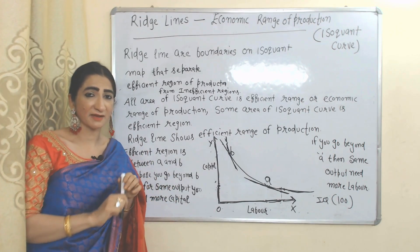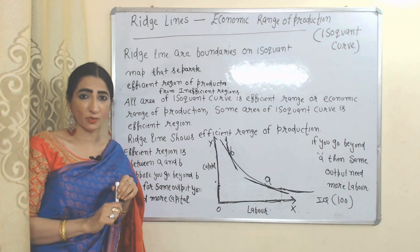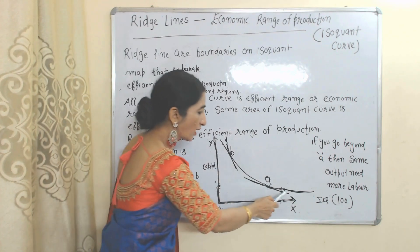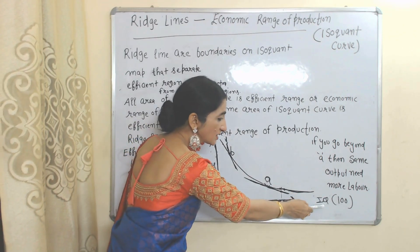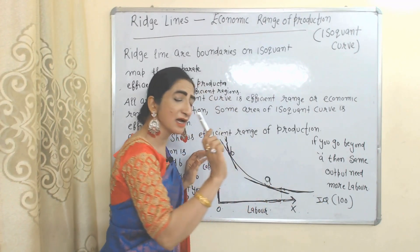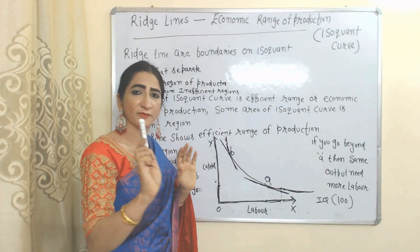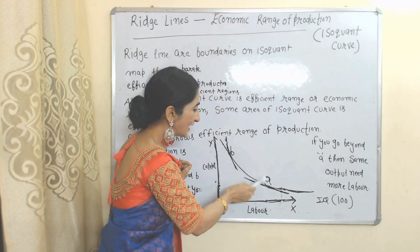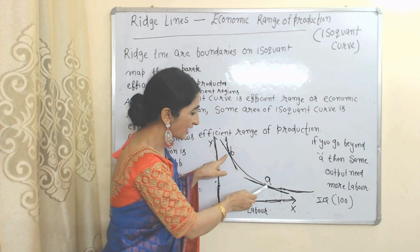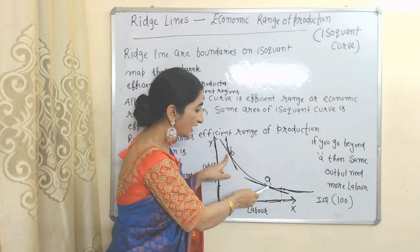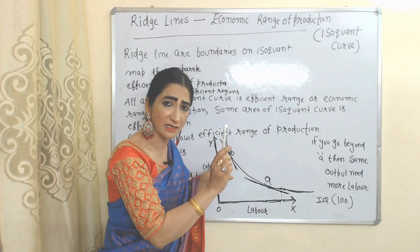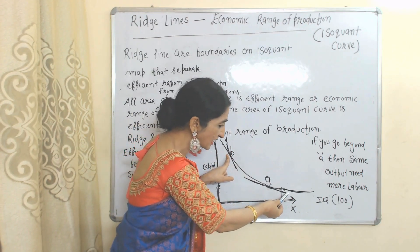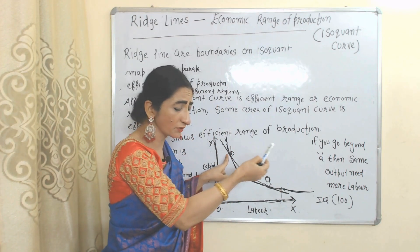Here we have one isoquant curve, and this isoquant curve gives us a hundred units of output. Here we have two points, A and B. Only the area between A and B is the efficient region.